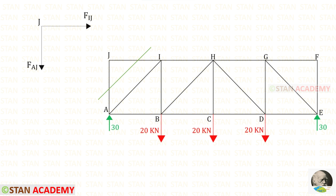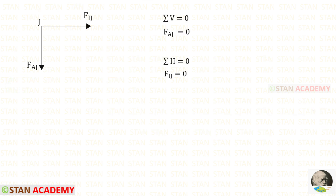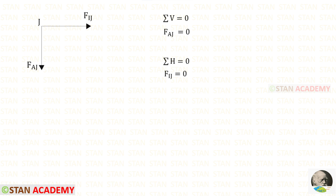I am going to make the first section and take that part for analysis. Applying sigma V equals zero, the only vertical force is FAJ, so FAJ equals zero. Applying sigma H equals zero, the only horizontal force is FIJ, so FIJ equals zero.